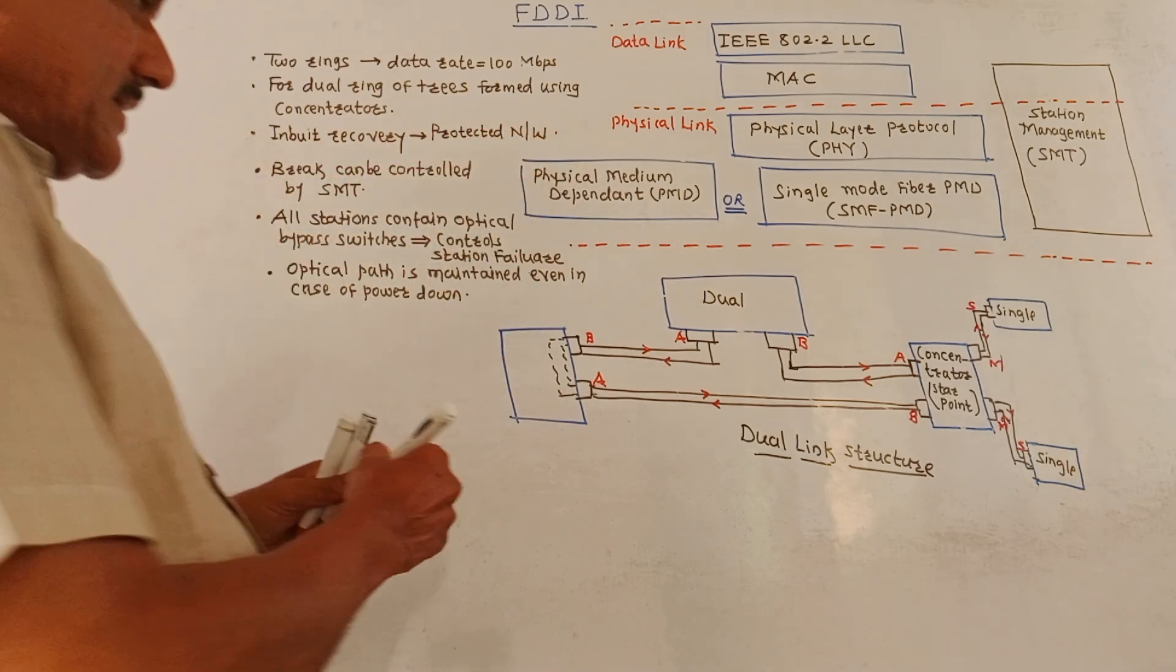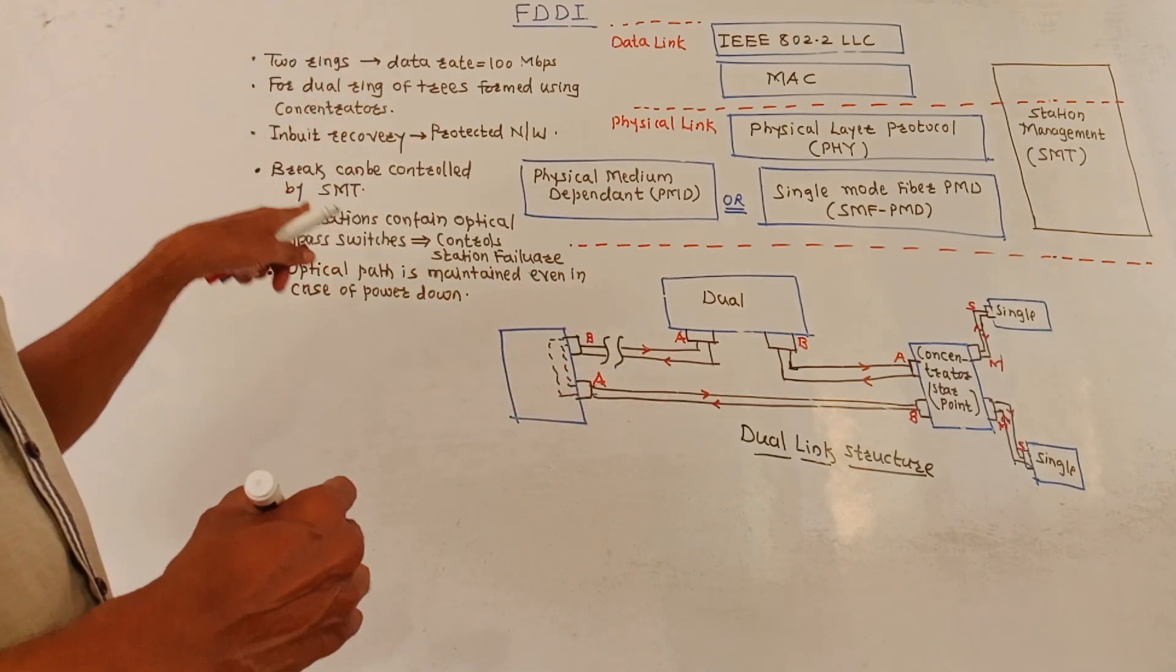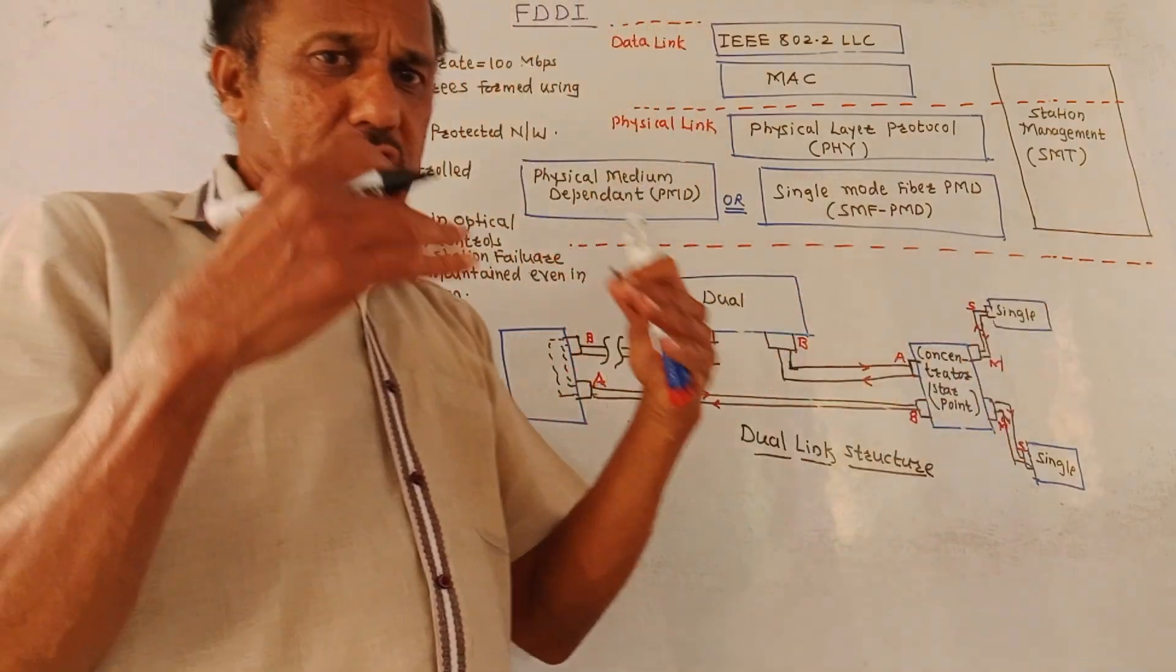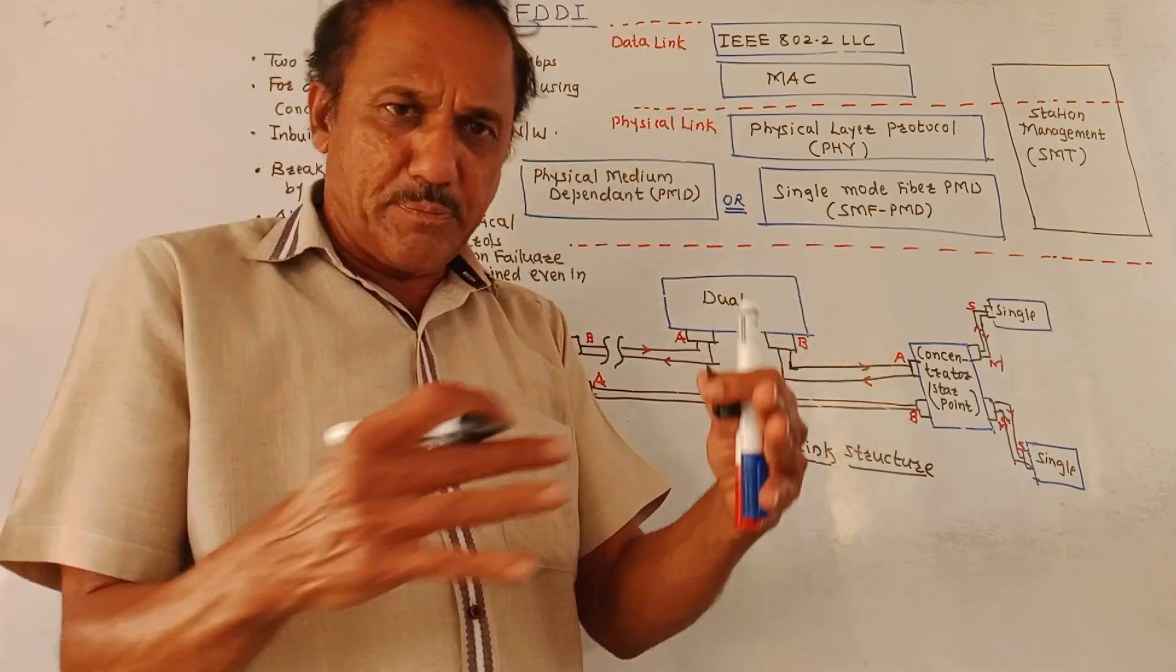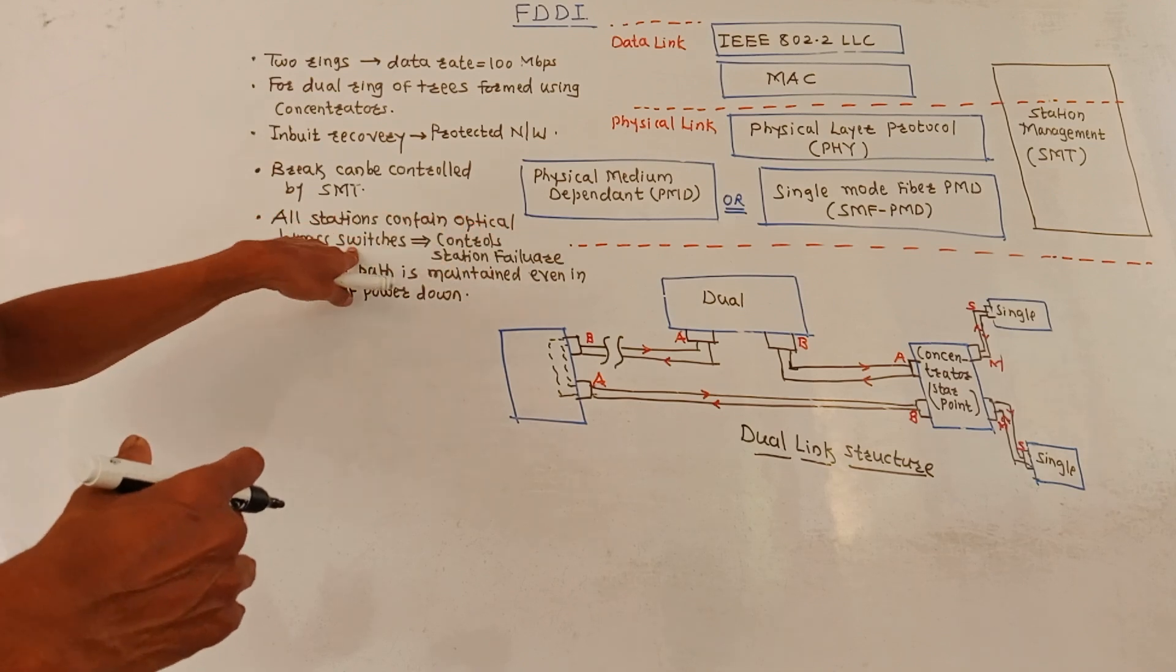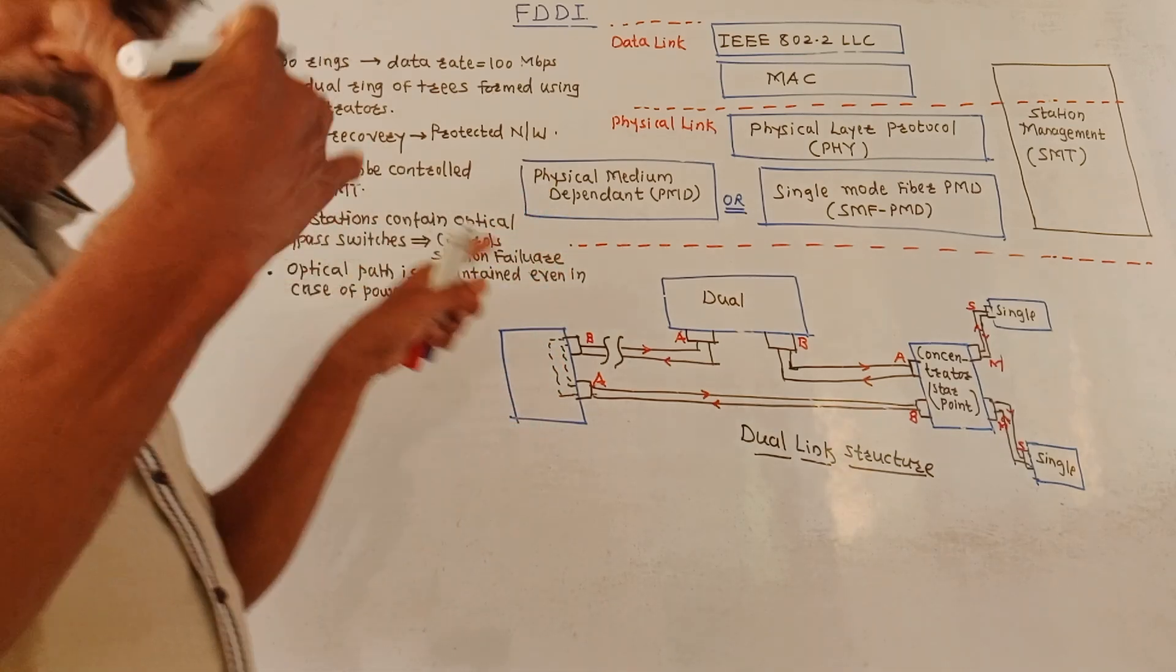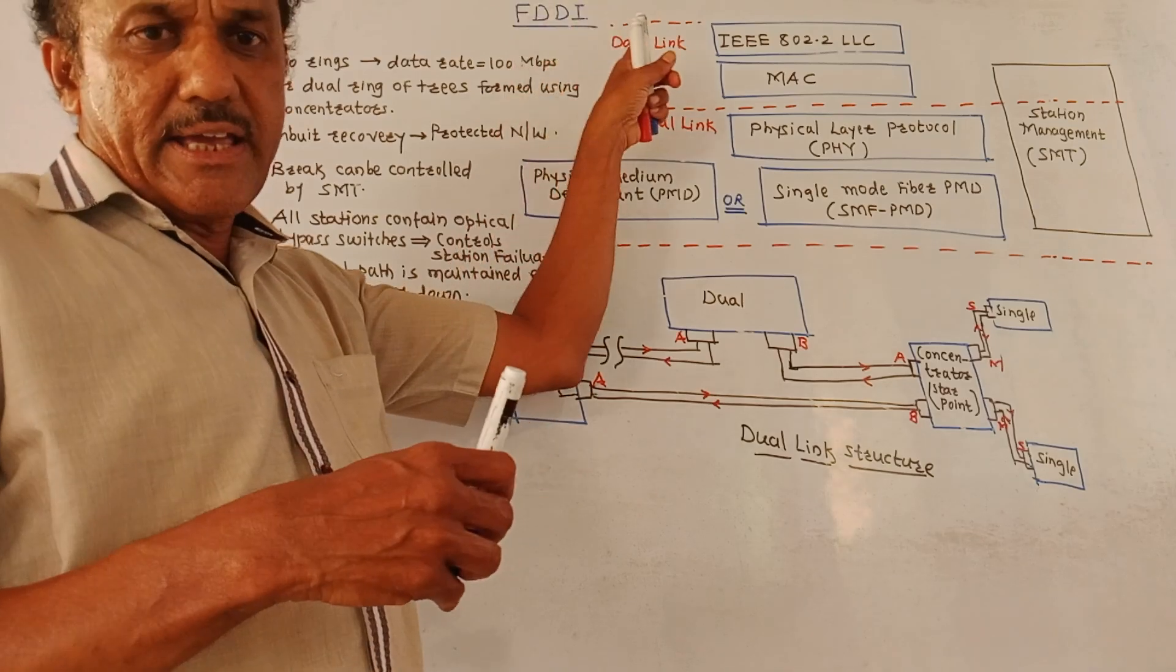If there is a break in the system, suppose this particular position is there, wherever break takes place, then it can be controlled by SMT, that is station management system. Station management consists of different optical switches and the data can be transmitted using different paths. All stations contain optical bypass switches which are used to provide the controlling action in case of a station failure. Then optical path is maintained even if there is a power failure. So, this is about the FDDI interface.